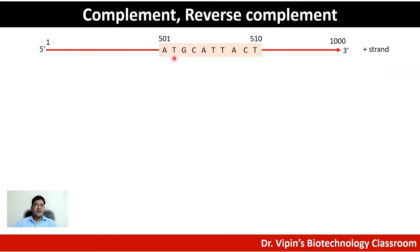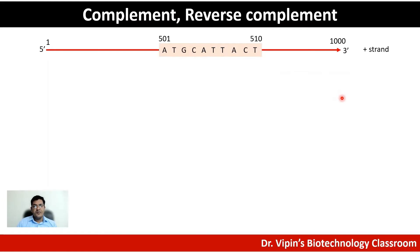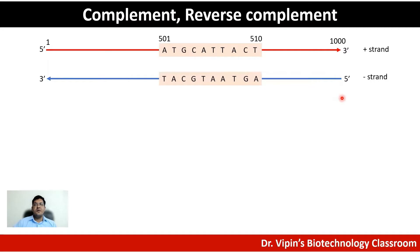If there is an A, there will be a T; if there is a T, there will be an A; for G it will be C, and for C it will be G. These basic rules of base complementarity allow you to derive the sequence for the minus strand. The plus strand sequence is present in the database and the minus strand sequence can be derived following the base complementarity rule. The second strand will be anti-parallel to the first one, with opposite orientation — three prime end on one side, five prime on the other.